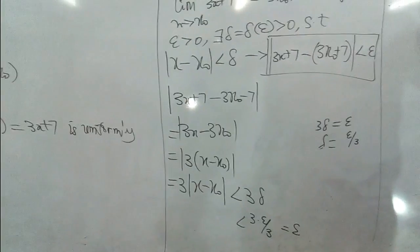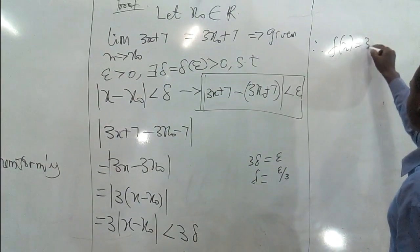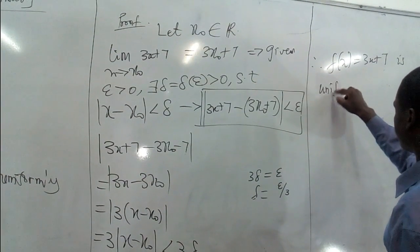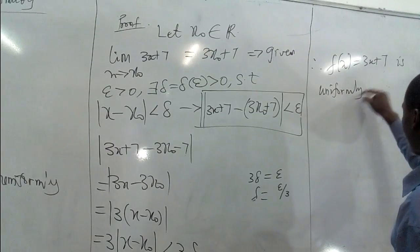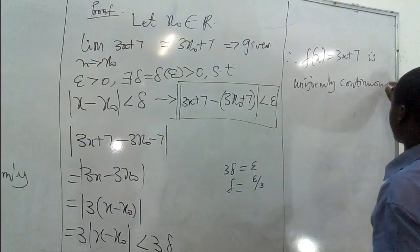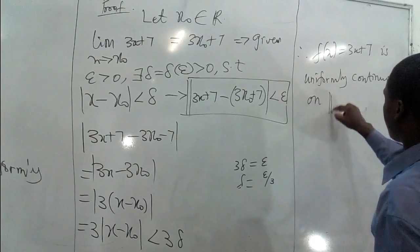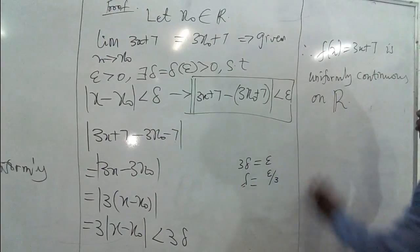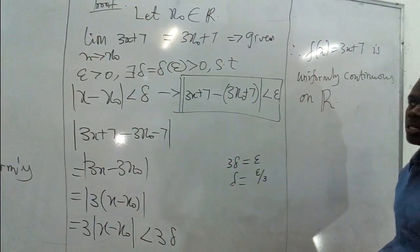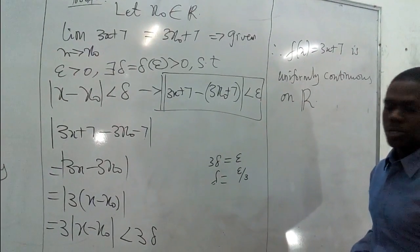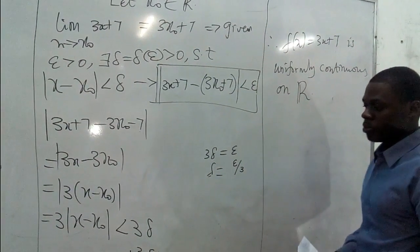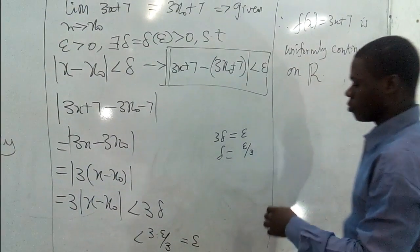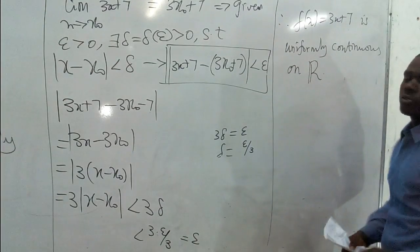Therefore, this function f(x) = 3x + 7 is uniformly continuous on R, the set of real numbers. It can also be said that once it is uniformly continuous on the set of real numbers, then it is also continuous on the set of real numbers. But what we are able to show is that we are selecting delta and it's not depending on x₀. So it is uniformly continuous on the set of real numbers.